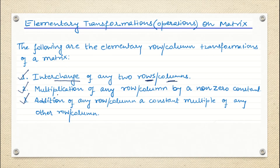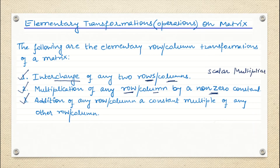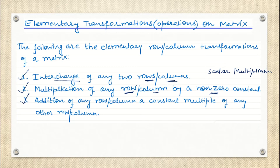The second method is multiplication of any row or any column by a non-zero constant. We have seen scalar multiplication on a matrix. Here, we are going to multiply any particular row by a non-zero constant, meaning that constant will get multiplied to every element of that particular row or entire column.